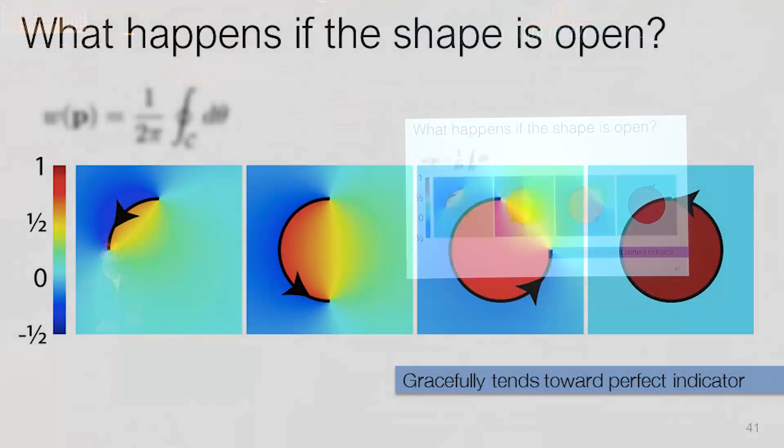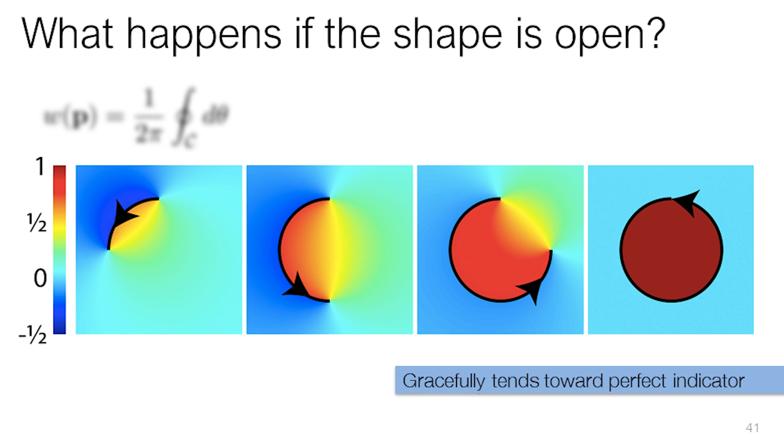And if we consider what happens as we get closer and closer to a closed shape, we see that this, in some sense, encodes the likelihood that we're inside or outside of the shape. And it perfectly agrees with our traditional notion of inside or outside once we have a perfectly clean shape.